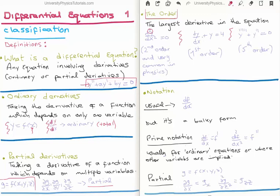Looking at the equation on the right-hand side, we have five primes, which indicates the fifth derivative, and also two primes indicating a second derivative. Because the highest derivative is the fifth, this is a fifth-order differential equation.